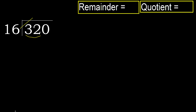16 — multiply by which number is nearest to 32 but not greater. 16 multiplied by 3 is 48; 48 is greater. 16 multiplied by 2 is 32; 32 is not greater.